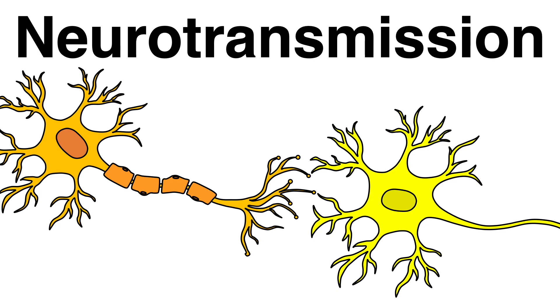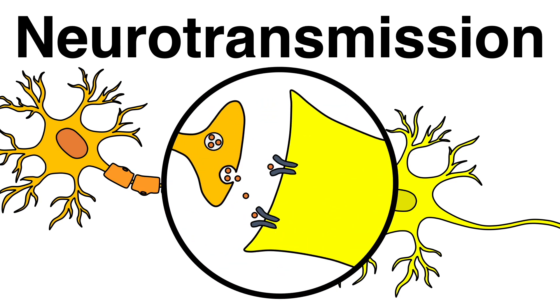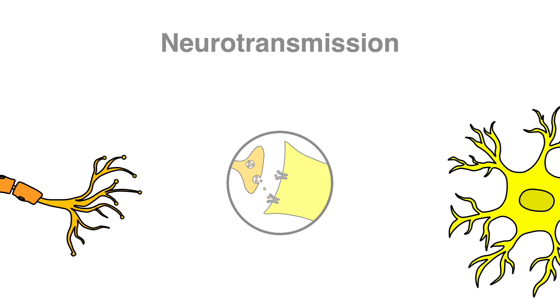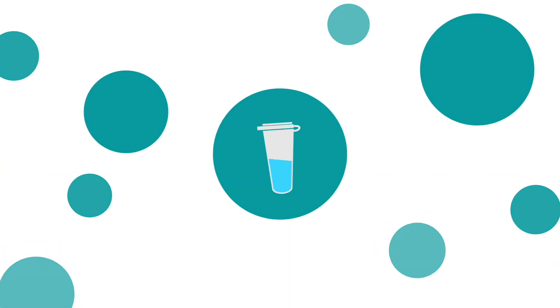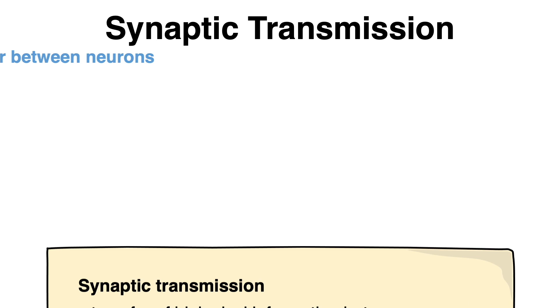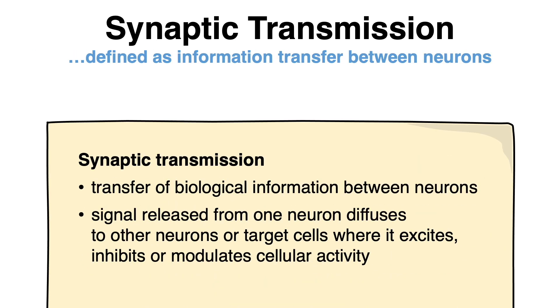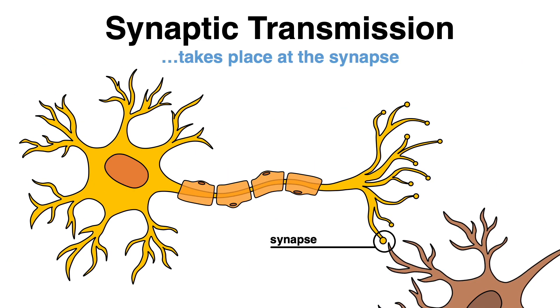In today's video we will zoom into the synapse and take a closer look at how neurons communicate. Neurotransmission, or more specifically synaptic transmission, describes the transfer of biological information between two neurons. Transmission takes place at the so-called synapse.